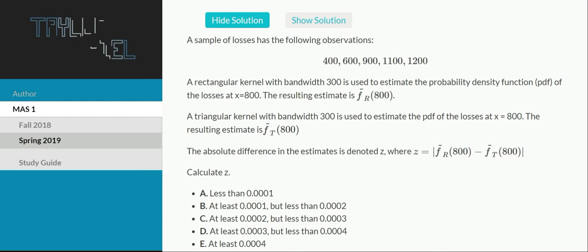A sample of losses has the following observations: 400, 600, 900, 1100, 1200. A rectangular kernel with bandwidth 300 is used to estimate the probability density function (PDF) of the losses at x equals 800. The resulting estimate is denoted f tilde sub r of 800. A triangular kernel with bandwidth 300 is used to estimate the PDF of the losses at x equals 800. The resulting estimate is denoted f tilde sub t of 800. The absolute difference in the estimates is denoted z, where z is the absolute value of f tilde sub r of 800 minus f tilde sub t of 800. Calculate z.